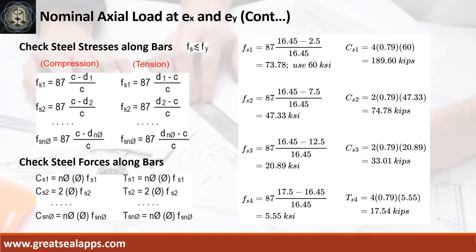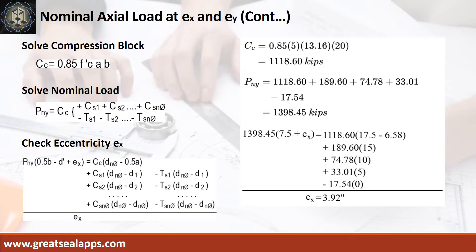Follow the given computations for stresses and forces of each layer: stress at D1 is 60 KSI with compressive force of 189.6 kips; stress at D2 is 47.33 KSI with compressive force of 74.78 kips; stress at D3 is 20.89 KSI with compressive force of 33.01 kips. Given f'c equals 5 KSI and stress block of 13.16 inches by 20 inches, the force of the compression block is 1,118.6 kips.